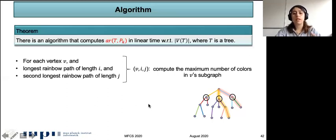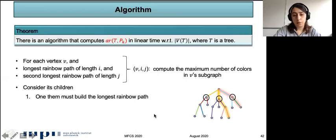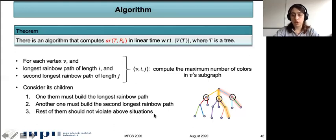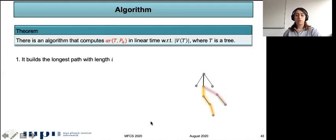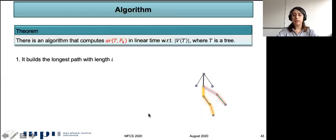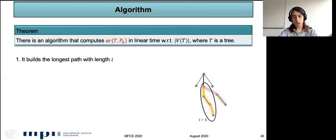For each vertex V with the longest rainbow path of length i and second-longest rainbow path of length j, we consider the triple (V, i, j) and compute the maximum number of colors in V's subgraph. We consider the children: one must build the longest rainbow path, another must build the second-longest rainbow path, and the rest must not violate these constraints. There are two ways to construct the longest rainbow path of length i: either the longest rainbow path from the child has length i−1, or the second-longest has length i−1. In the first case, we assign a new color to the connecting edge to obtain a rainbow path of length i.